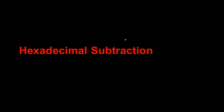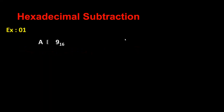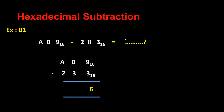Now we do hexadecimal subtraction. I have A B 9 minus 2 8 3. What is the answer? 9 minus 3 answer is 6, B minus 8 — B is 11 minus 3 is 8. And then A minus 2 — A is representing 10 minus 2 answer is 8. So my answer is 8 8 6 hexadecimal value.